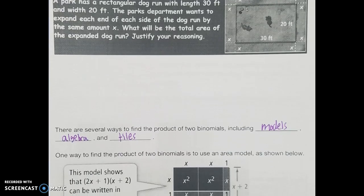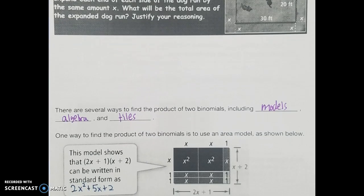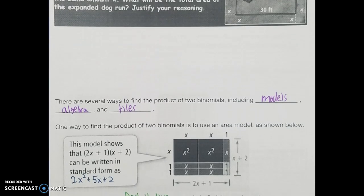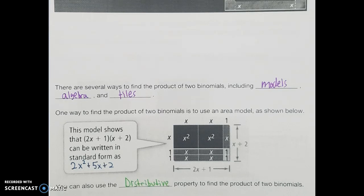One way that we can find the product of two binomials is to use an area model like the one we see below here. So if I show 2x plus 1 times x plus 2, if I write that in terms of tiles, again 2x plus 1 I have across the top, and x plus 2 I have down the side.